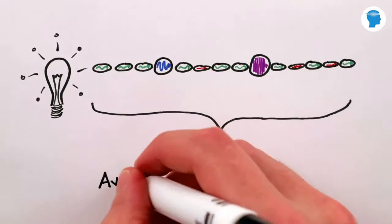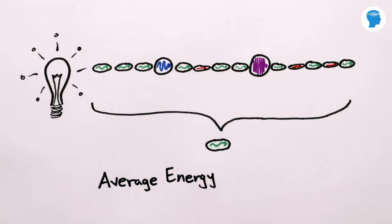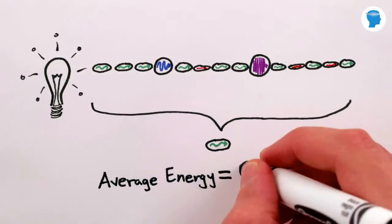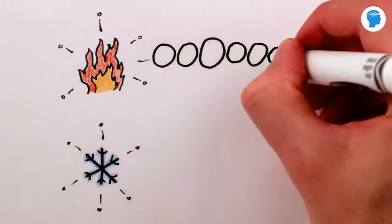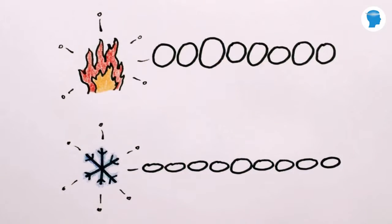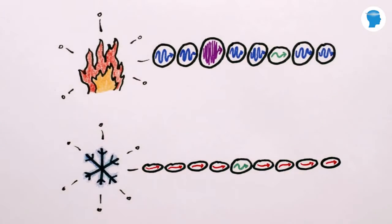This common average energy that the packets carry is, in fact, what we mean by temperature. So a higher temperature just means higher average energy, and thus, by Planck's rule, a higher frequency of light emitted.